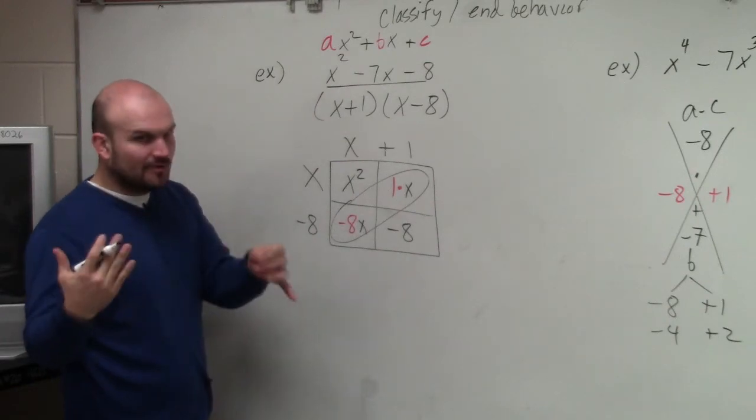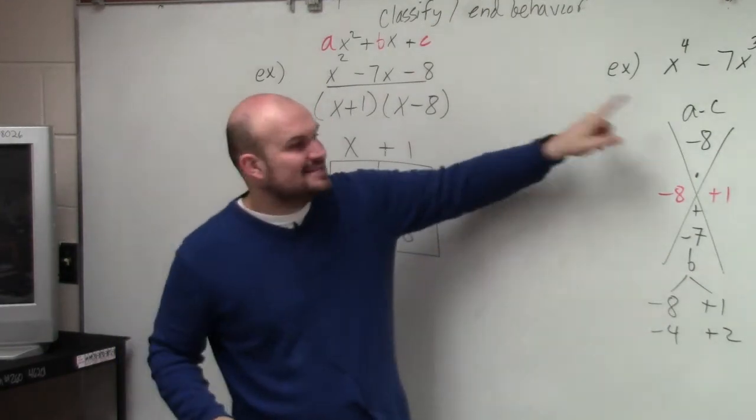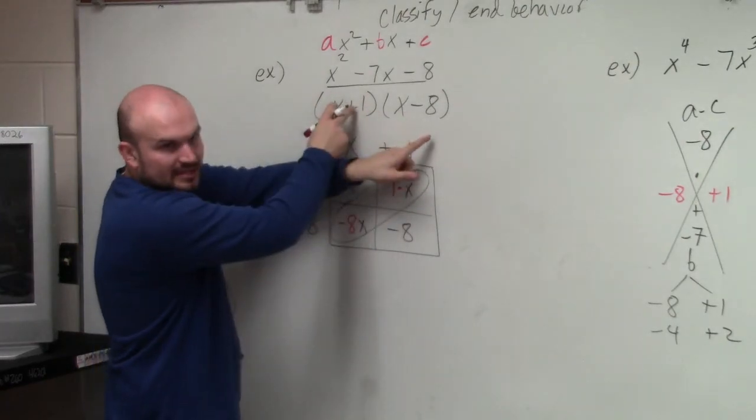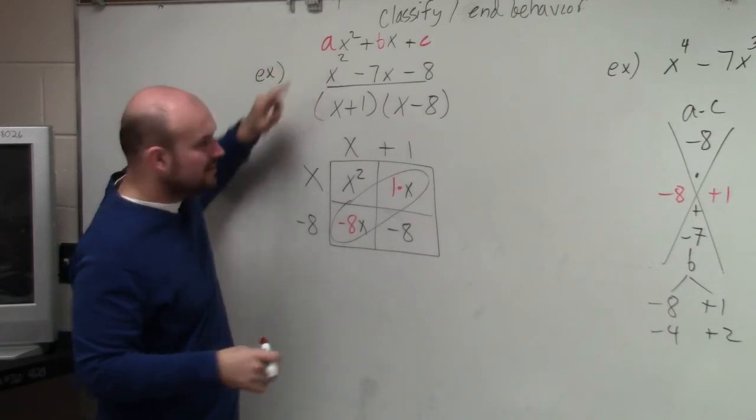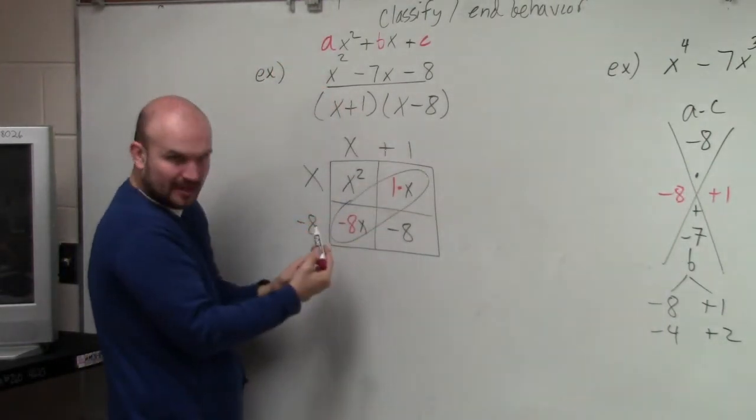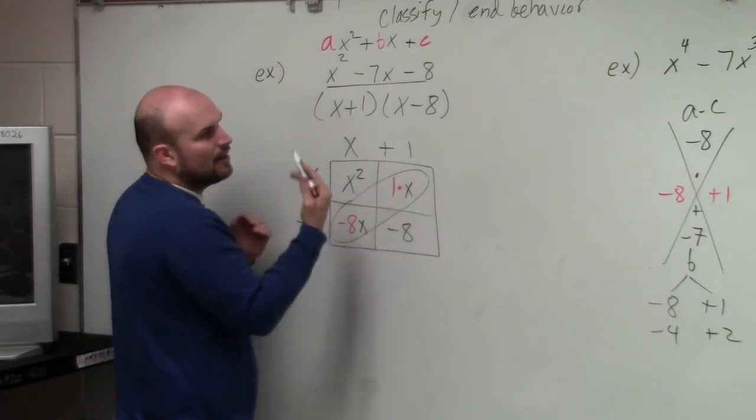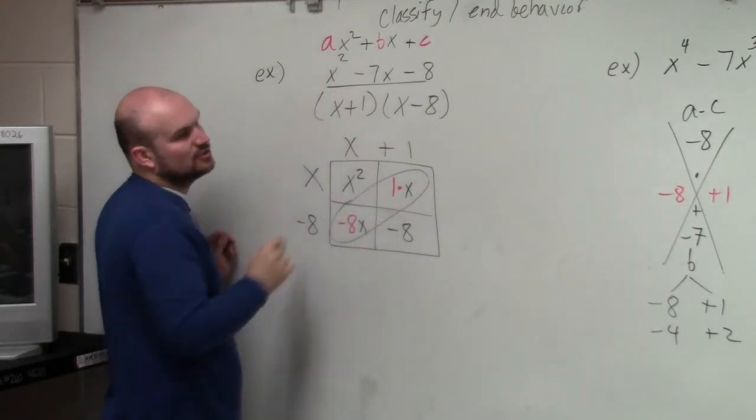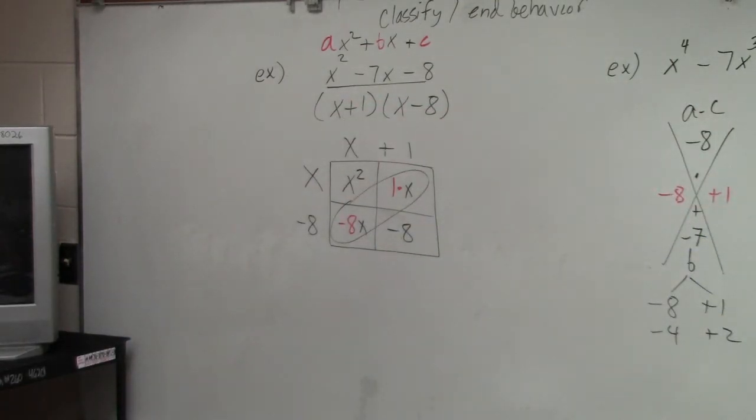Now, what's helpful about this is the tip, the easy way, is when a is equal to 1, notice how these numbers are in your factors. Do you see that? However, don't get that confused because when a is not 1, these numbers are not the same numbers. You have to use the box. So you can always use the box if you want to, you don't have to, you can always use it. However, a little bit of a trick is these are the same as your factors when a is equal to 1. So that is your factored form, and again, we're not solving, we're just factoring right now.